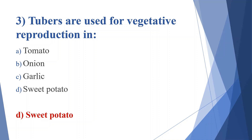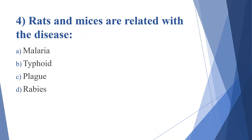Fourth question: rats and mice are related with the disease. Option A: malaria. Option B: typhoid. Option C: plague. Option D: rabies. Answer is option C, plague.